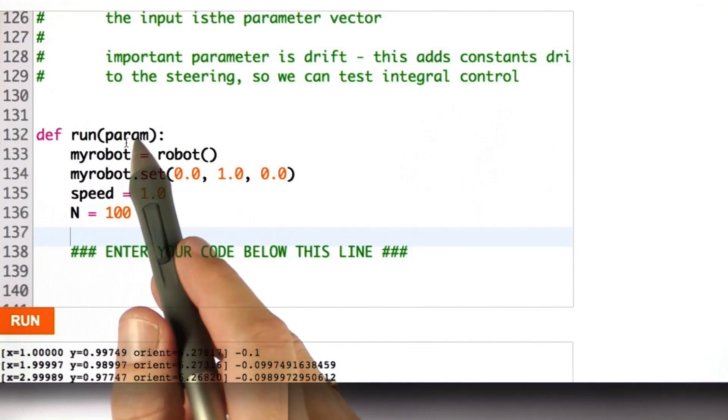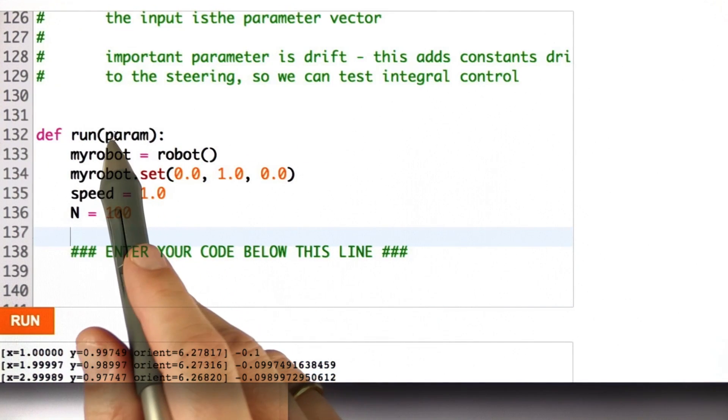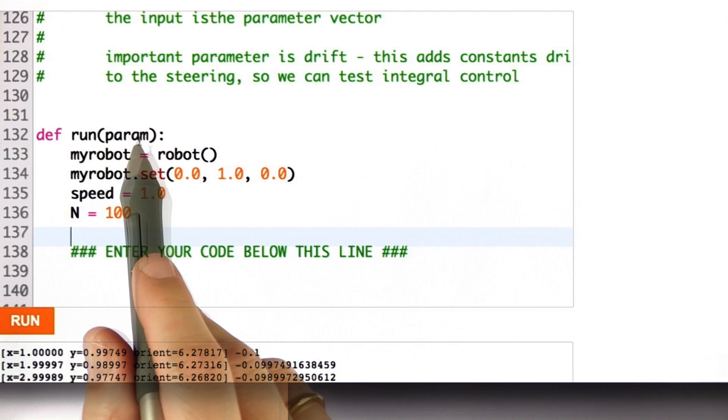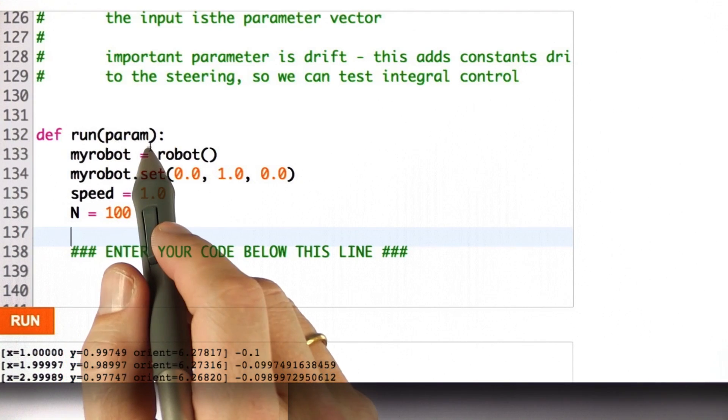I wanted to implement the run command, which takes as input the control parameter that governs the proportional response of the steering angle to the cross-track error.